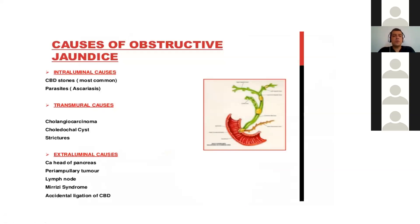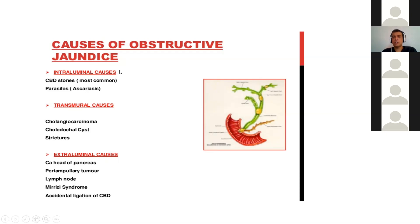Obstructions can be classified as intraluminal, transmural, and extramural. Intraluminal causes are those inside the lumen — like a CBD stone, which is most common, or parasitic infection such as ascariasis, where a roundworm goes inside and blocks the duct. Clonorchis sinensis is also a major cause. These are mostly intraluminal causes.